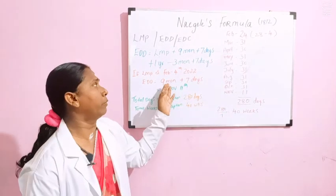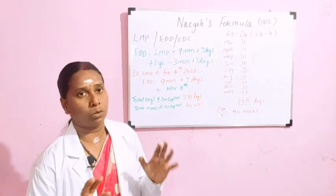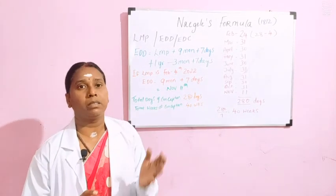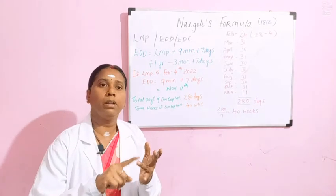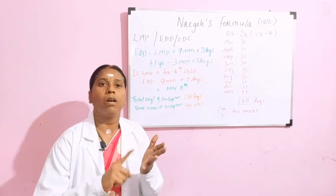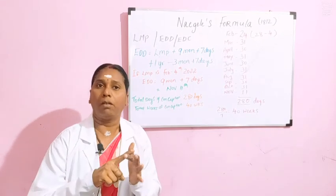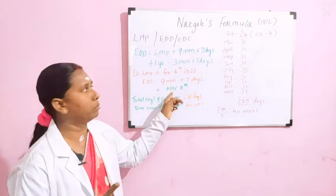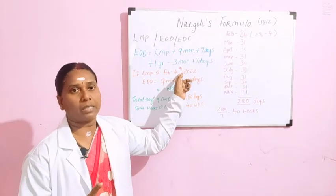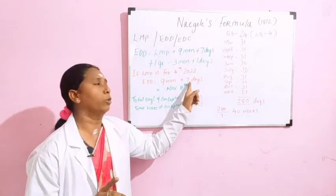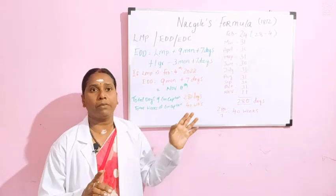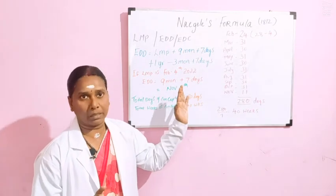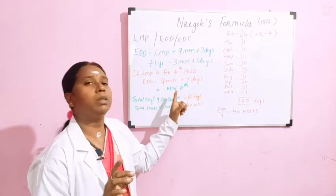Now you have to add 9 months plus 7 days. February is the LMP date, so adding 9 months: March, April, May, June, July, August, September, October, and November. November becomes the month of delivery. With the date, you take the 4th and add 7 days, giving you 11. So the expected date of delivery for this mother is November 11th.